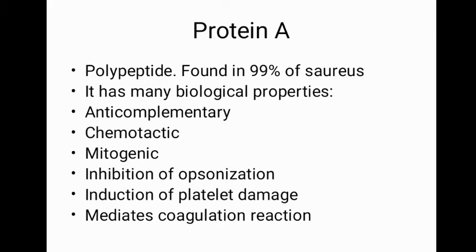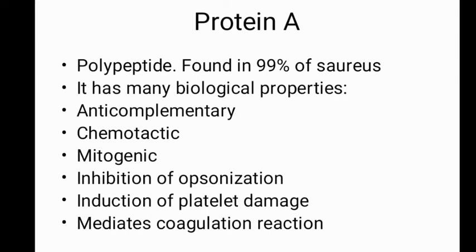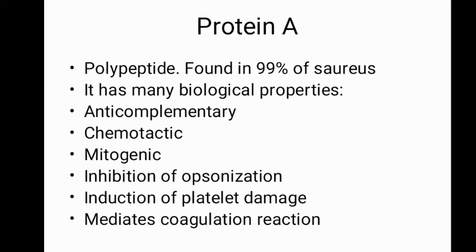Protein A is a polypeptide encoded by the spa gene, present on 90 to 99 percent of human Staphylococcus aureus strains. It has several biological properties. It acts as anti-complementary — meaning it diminishes the ability of antibodies and phagocytic cells to clear microorganisms. Normally, the complement system enhances antibodies and phagocytes to clear microbes and promote inflammation. Protein A opposes this, allowing antigens to increase in number and cause infection.